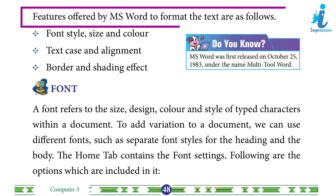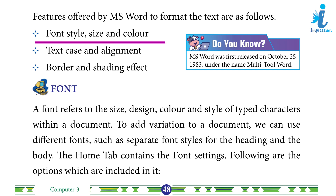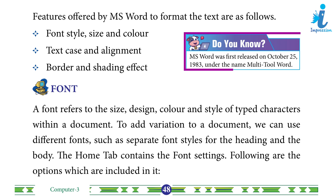Features offered by MS Word to format the text are as follows: Font Style, Size and Color; Text Case and Alignment; Border and Shading Effect. Did you know? MS Word was first released on October 25, 1983 under the name Multitool Word.